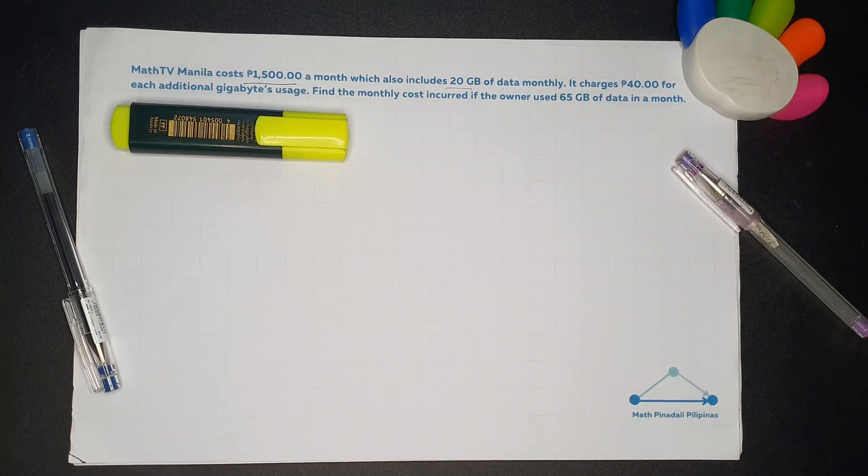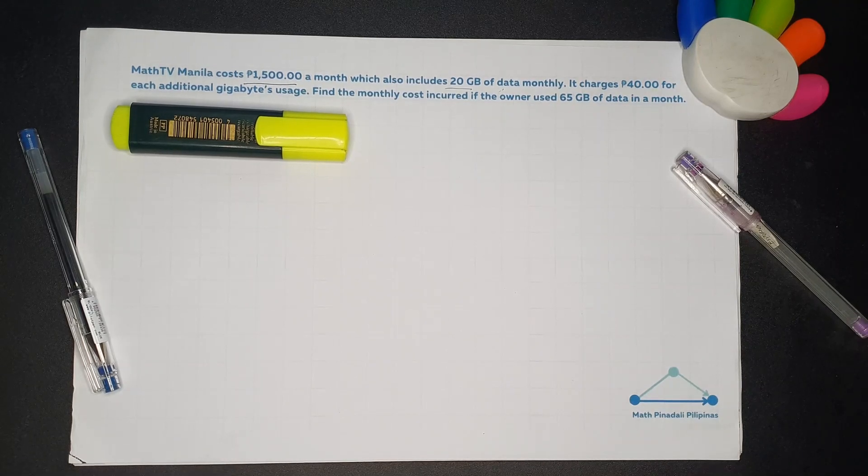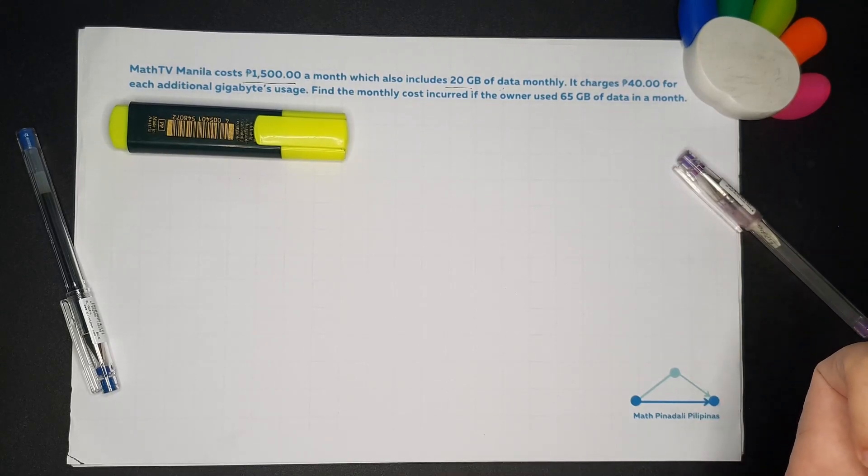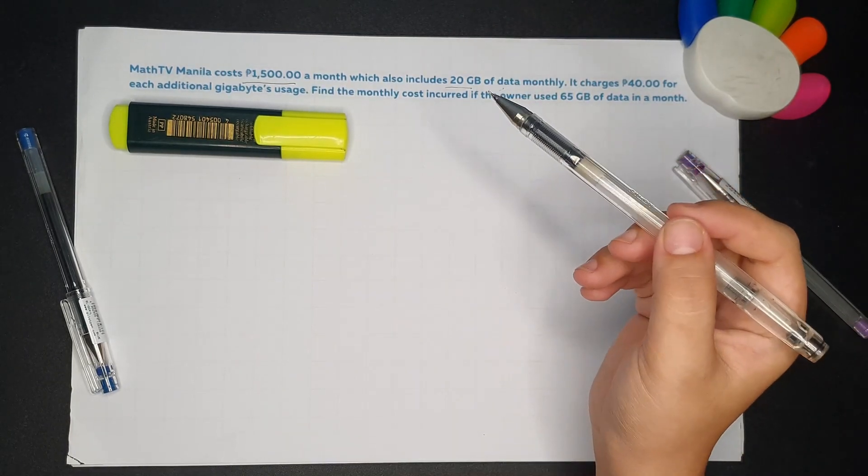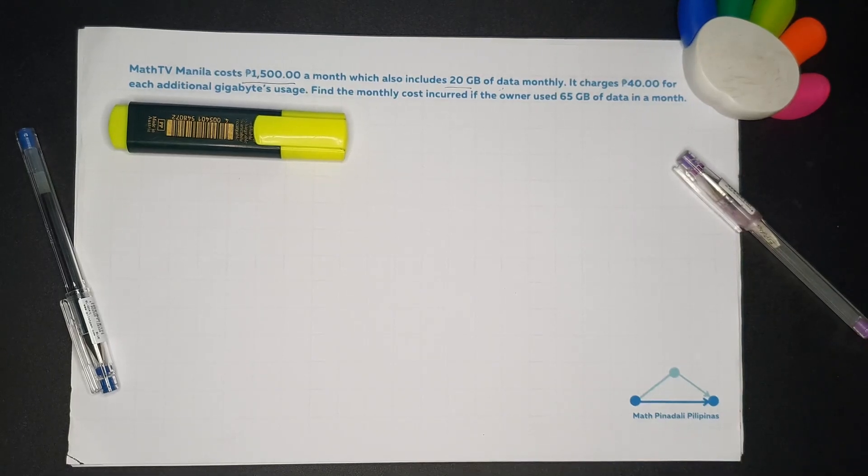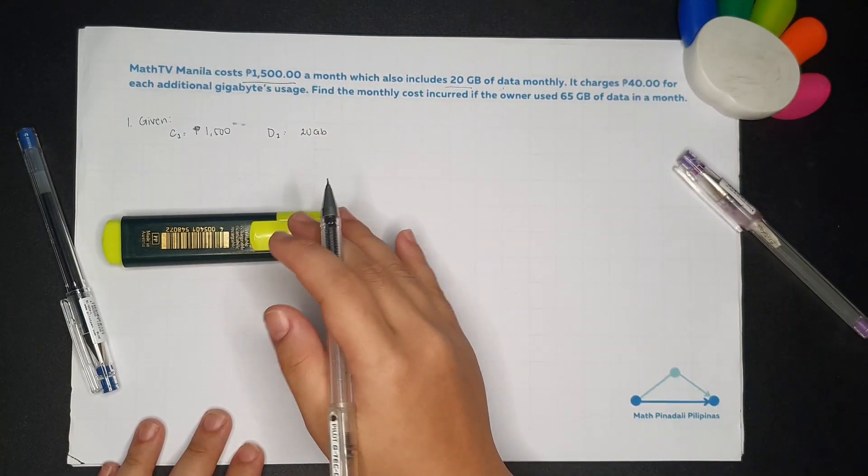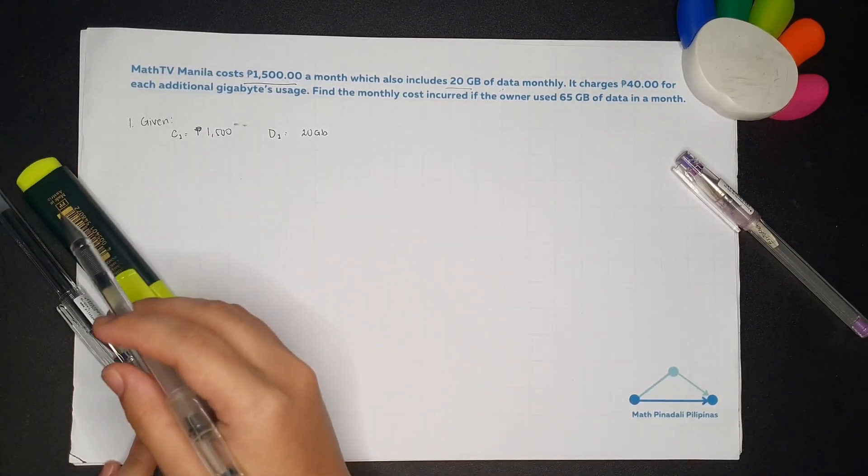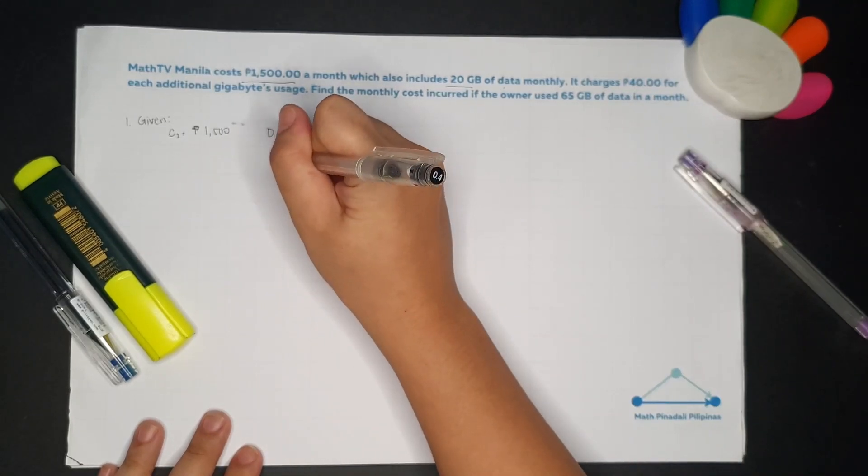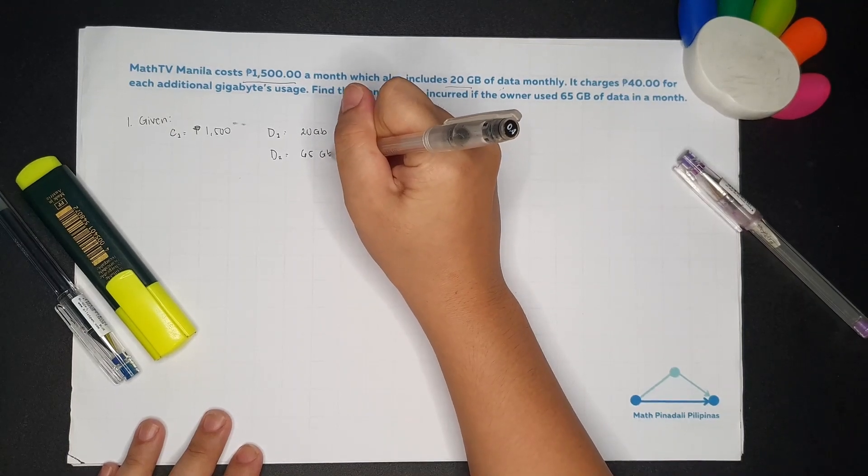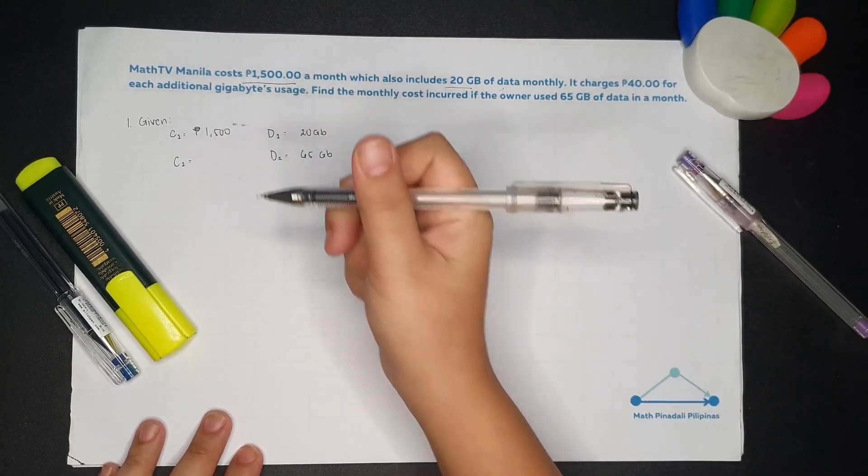We can identify that we have two variables here. The first one is the data, and the second one is the cost. For every data, there is a corresponding cost. So the given for the first set is for 20 GB of data, the cost will be 1,500 pesos. The second data is 65 GB, and the cost C2 is unknown.